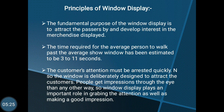We will see the principles of window display. The fundamental purpose of window display is to attract passers-by and develop interest in the merchandise displayed. The time required for the average person to walk past the average show window has been estimated to be 3 to 11 seconds. The customer's attention must be arrested quickly, so the window is deliberately designed to attract customers. People get impressions through the eye more than any other way, so window display plays an important role in grabbing attention and making a good impression.